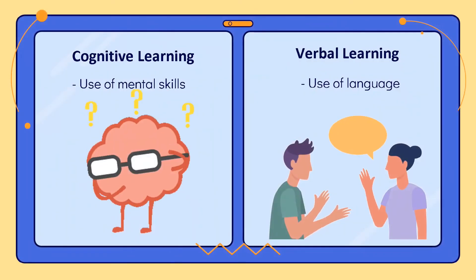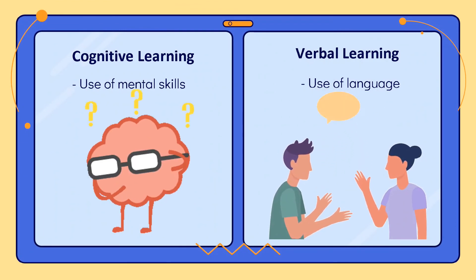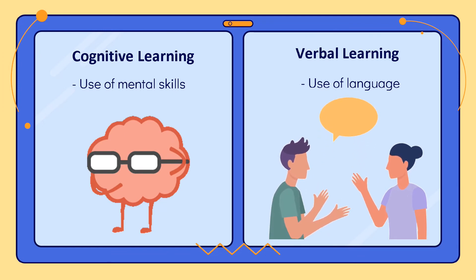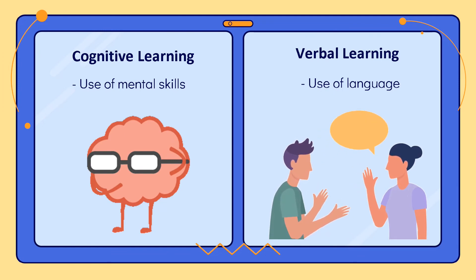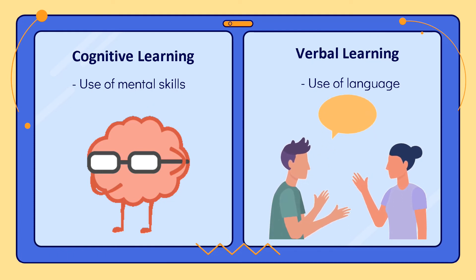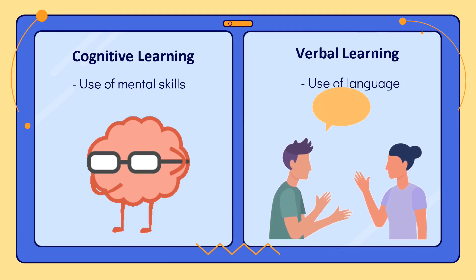The fifth form is cognitive learning, where we use our mental skills. And the sixth is verbal learning, where we use language to communicate and learn through conversing or interaction.